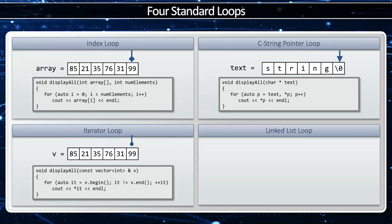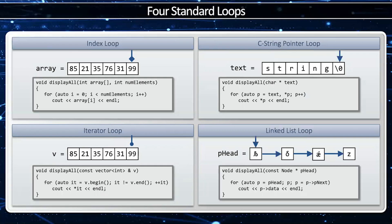The final type of loop, which is the one we care about today, is the linked list loop. Here I'm going to have a collection of elements where each node is pointing to the next element. I can't say i++ because each element is not next to each other in memory. I can't say p++ because each node is not adjacent. Instead, I have to say p equals p arrow p next. I'm going to start with p pointing to the first element, and as long as that pointer is not the null pointer, I'm going to keep saying p equals p arrow p next to advance through the loop.